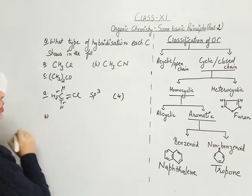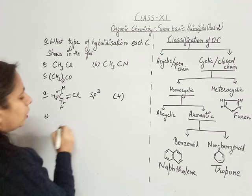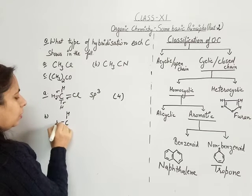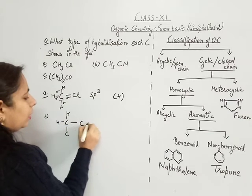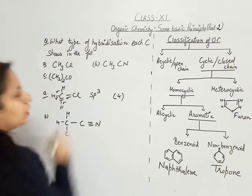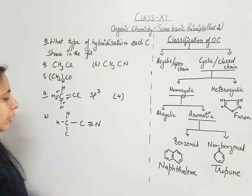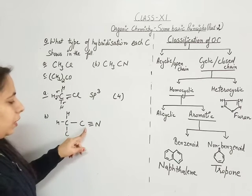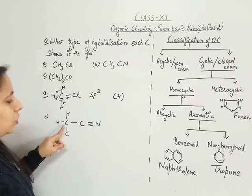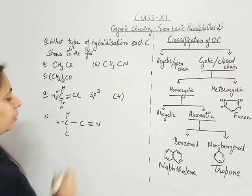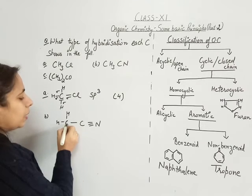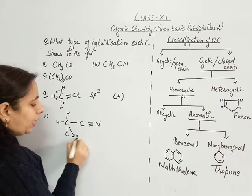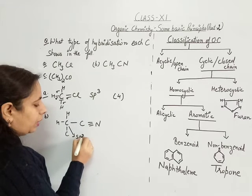Discussing the second molecule: CH3CN. Two carbon atoms are there. For the CH3 carbon, we can see that carbon is forming 4 sigma bonds, so this carbon is SP3 hybridized.